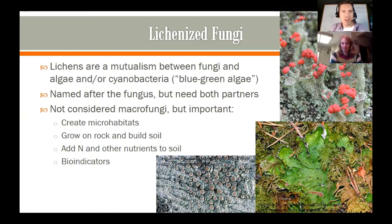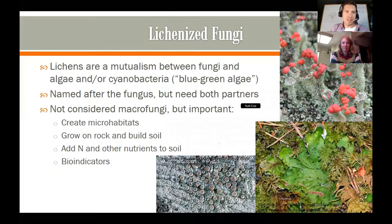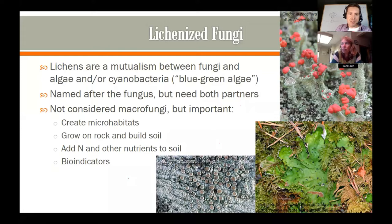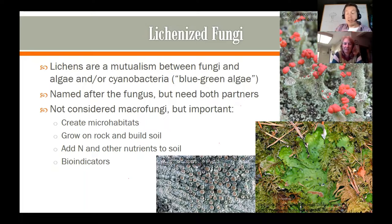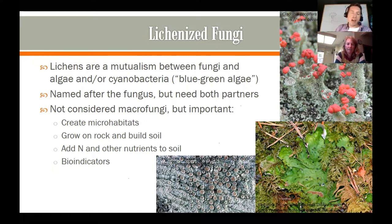Now a little bit about lichens, because they are another passion of mine. Lichens are kind of like mycorrhizae — they are a mutualism between something photosynthetic and a fungus. But in this case the photosynthetic partner is tiny — tinier than the fungus. It is between fungi and either a true alga or cyanobacteria. Cyanobacteria are often called blue-green algae, even though they are in a completely different kingdom — they are actually a type of bacterium.